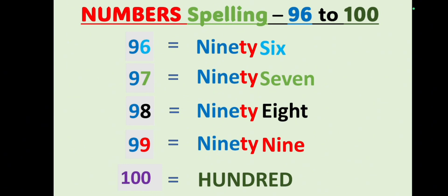Students, since you already know the numbers 1 to 10 with spelling, all you have to do is write down 90 and then add 1 for 91, write down 90 then 2 for 92, 93, 94, and so on. So if you know the spelling of 1 to 10 and have already gone through our video on 10 to 100 skip counting, this section will be easy.